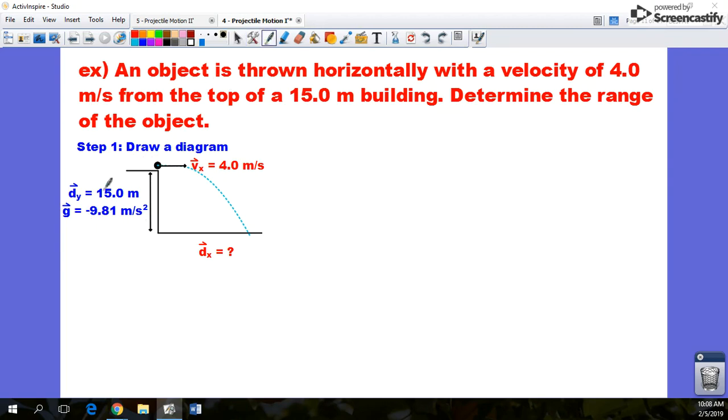One thing I like to do is put a negative sign on that displacement in the y direction because that object is going to go downwards. All right, so I've got my diagram set up.